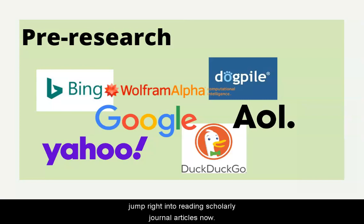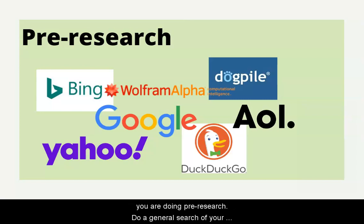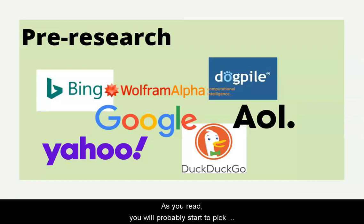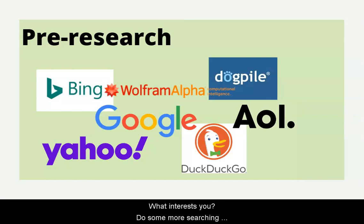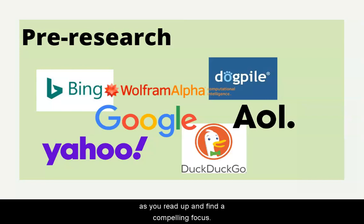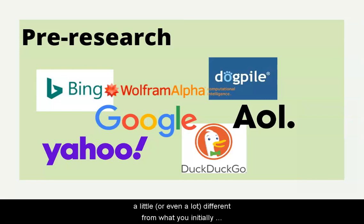Don't feel like you need to jump right into reading scholarly journal articles right now. A good Google search session is all you need when you are doing pre-research. Do a general search of your topic and just start reading. As you read, you will probably start to pick up on themes and keywords associated with this topic. What interests you? Do some more searching using these new keywords. Your topic may start to evolve as you read up and find a compelling focus, and may end up being a little or even a lot different from what you initially thought you wanted to research.